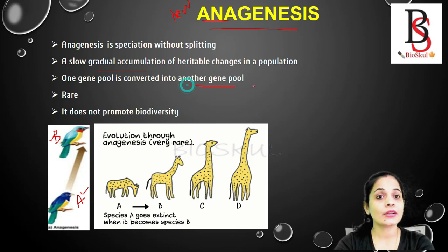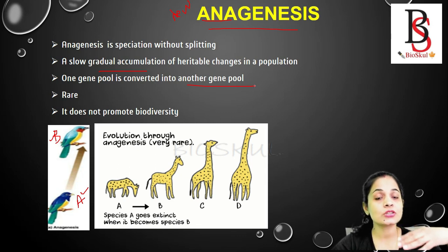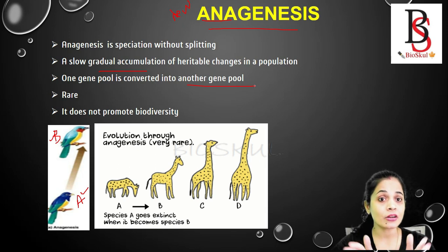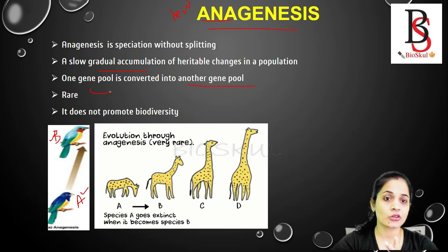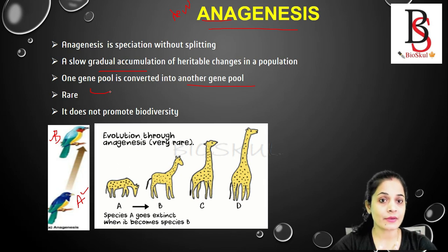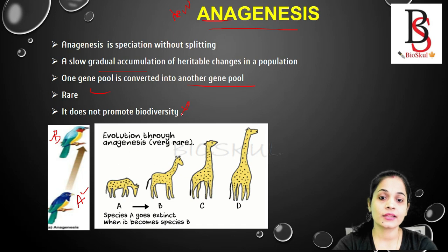In anagenesis, one gene pool is converted into another gene pool. The gene pool is the total amount of genes present in a population of a species. As one species changes into another, the gene pool also changes into a new gene pool. This pattern of evolution is rare in nature, and it does not promote biodiversity — because when the new species is formed, the old species goes extinct.